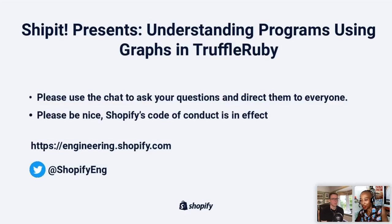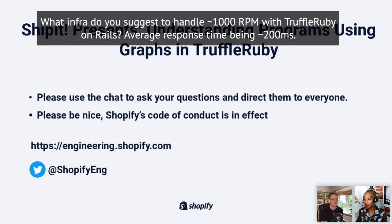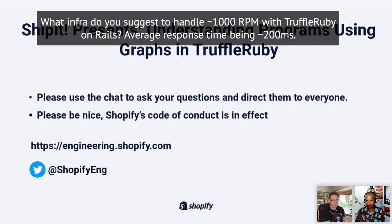What infrastructure do you suggest to handle approximately 1000 RPM with TruffleRuby on Rails with an average response time under 200 milliseconds? I'm afraid it's probably still too early to answer that kind of question — we're not running a large application at scale with good performance yet to be able to measure that. What I'm doing at Shopify is trying to run a large production application on top of TruffleRuby, and when we have that working well, we'll be able to answer these questions. Shopify is absolutely pushing forward the goal of trying to answer how fast TruffleRuby can be on a real entire application.